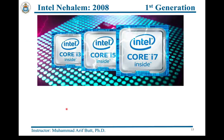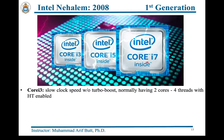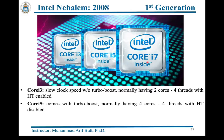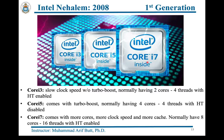In 2008 Intel launched the Nehalem microarchitecture and introduced a new naming scheme for its Core processors — Core i3, Core i5, and Core i7. The names have nothing to do with the number of cores. A Core i3 comes with a slower clock speed without turbo boost, normally with two cores, four threads and hyper-threading enabled. Core i5 comes with turbo boost for faster speed under high demand, normally with four cores and four threads with hyper-threading disabled. Core i7 is for power users with more cache, more clock speed, and more cores — normally with 8 to 16 threads and hyper-threading enabled.